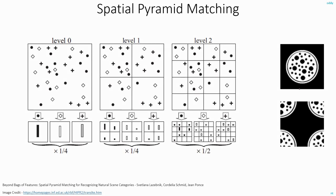Remember when we were discussing the histogram concept, we discussed that these two images will have the same histogram. Because the second image is just a jumbled up version of the first one. Since the number of pixels with different intensity values is the same in both images, the histogram of these two images will look the same. The same thing happens if you are extracting features, either HOG or SIFT, and doing the bag of words representation — plotting the histogram of different features. For both images, the histogram will look the same.